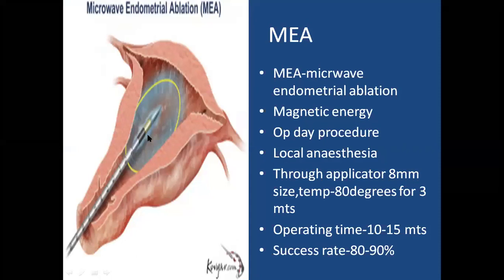Microwave endometrial ablation: this is the probe from which microwaves are emitted to cause ablation of the endometrium. It uses microwave energy, can be done as an outpatient day procedure under local anesthesia. The applicator is 8 mm in size. Temperature is increased to 80 degrees for 3 minutes to ablate the endometrium. Operating time is only 10 to 15 minutes; success rate is 80 to 90 percent. This is MEA — microwave endometrial ablation.